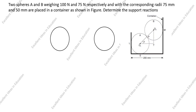Hi friends, welcome to my channel Excellent Ideas in Education. Today we are going to solve this engineering dynamics problem. This is an equilibrium of spheres problem — this is a very important problem. Two spheres A and B weighing 100 Newton and 75 Newton.